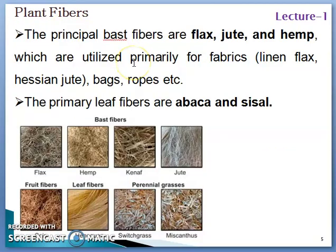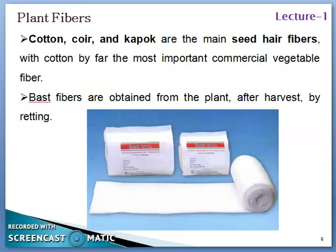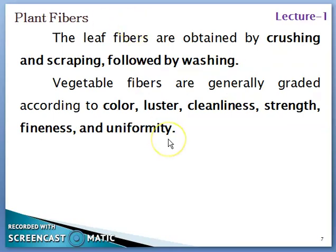Plant-based fibers such as flax, jute, and hemp are utilized primarily for fabrics, linen, and also in preparation of bags and ropes. The primary leaf fibers are abaca and sisal, which are widely used. Plant fibers such as cotton, coir, and kapok are the main seed fibers, with cotton by far the most important commercial vegetable fiber. Bast fibers are obtained from the plant after harvest by retting, while leaf fibers are obtained by crushing and scraping followed by washing.